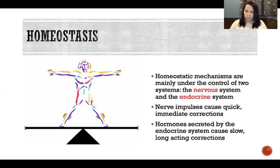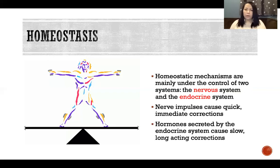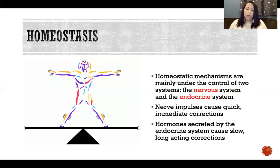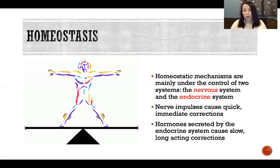Homeostatic mechanisms are mainly under the control of two systems: the nervous system and the endocrine system. The nervous system and the endocrine system control absolutely everything the body does. The nervous system includes the brain, spinal cord, and all the nerves — the central nervous system. The endocrine system is our system of hormones. Together, these two systems are controlling everything else in the body to maintain homeostasis and to keep us not only alive, but healthy.